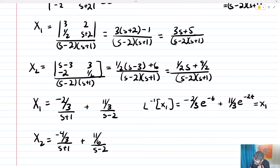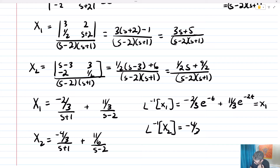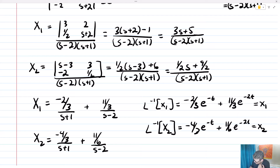Taking the inverse Laplace transform of big X1 gives little x1 = negative 2/3 · e^(negative t) plus 11/3 · e^(2t). Taking the inverse Laplace transform of big X2 gives little x2 = negative 4/3 · e^(negative t) plus 11/6 · e^(2t). And that is the solution to our system of differential equations.